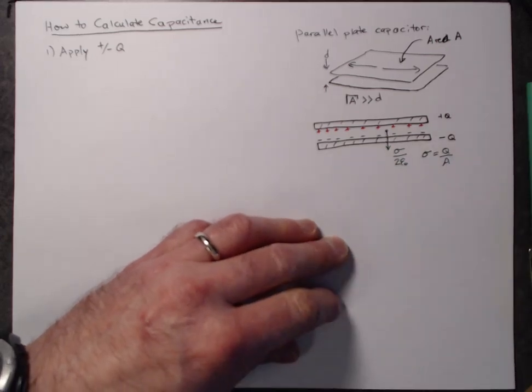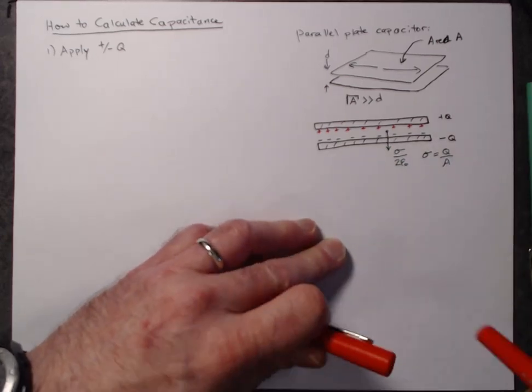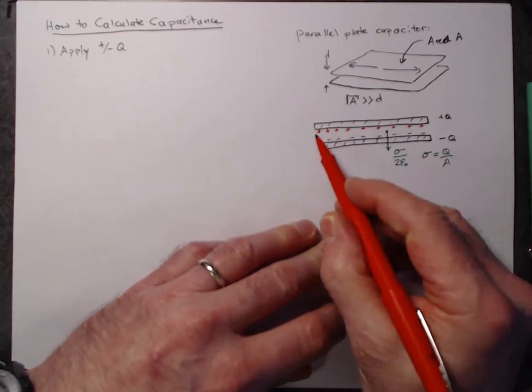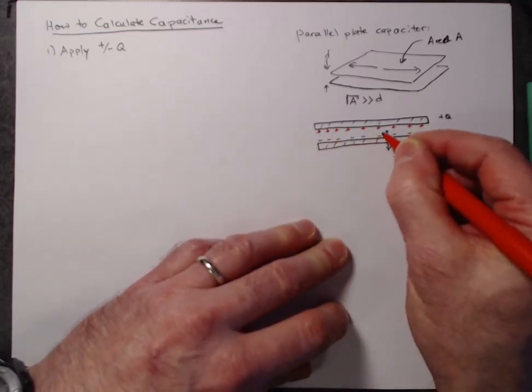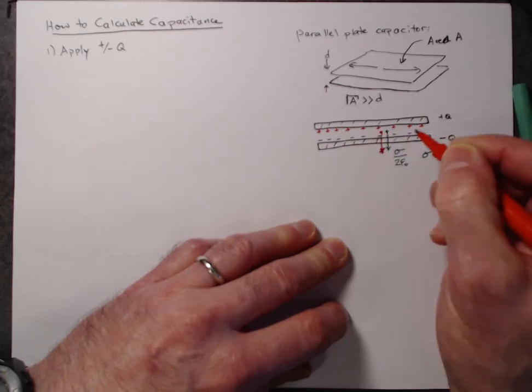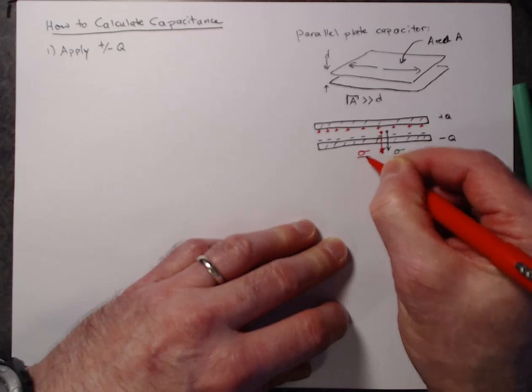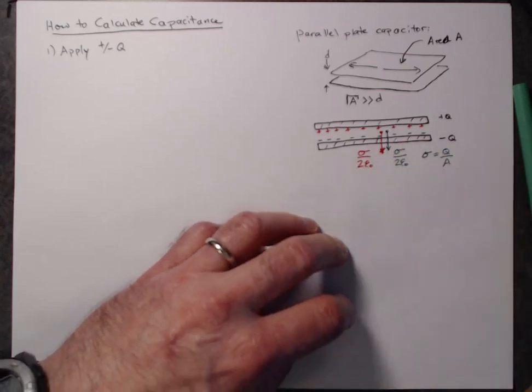Similarly, the electric field due to the top plate, the sheet of charge on the top plate, it points away from positive charges, so it will also point downward, and it's going to have the same magnitude sigma over two epsilon naught, because it has the same charge per unit area sigma.